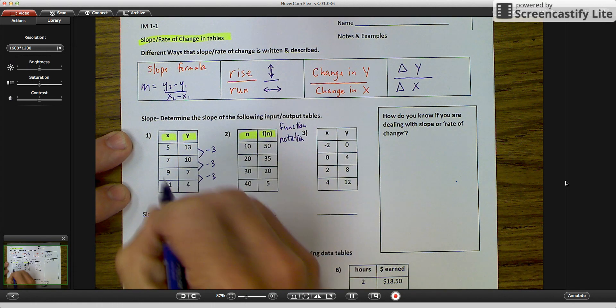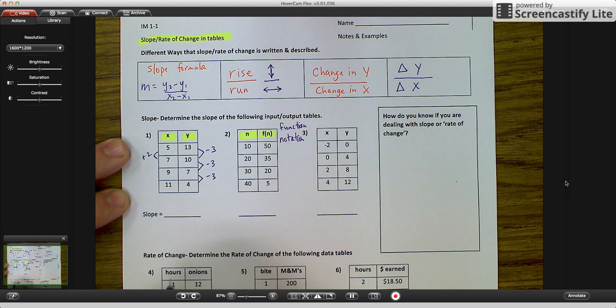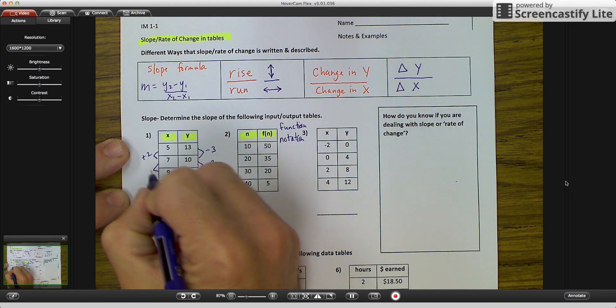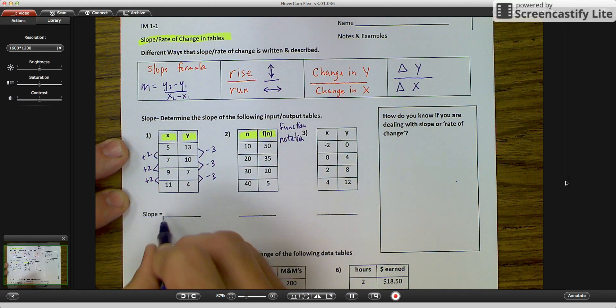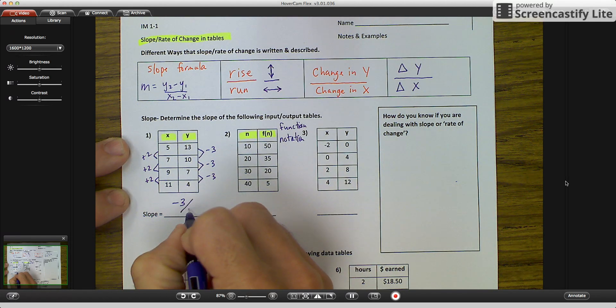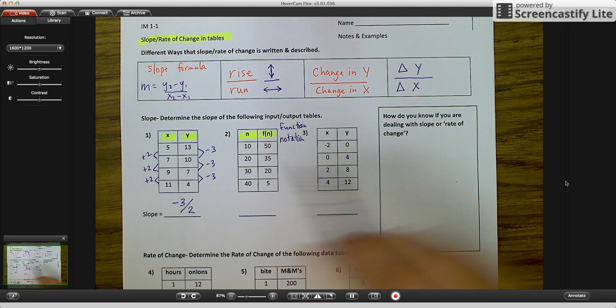My change in x's is 5 to 7, which would be plus 2, from 7 to 9 which would be plus 2, and from 9 to 11, plus 2. So my slope here is a negative 3 over 2, or my change in my y's over my change in my x's.